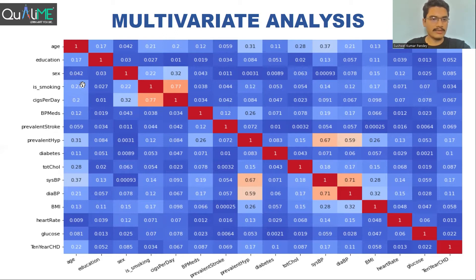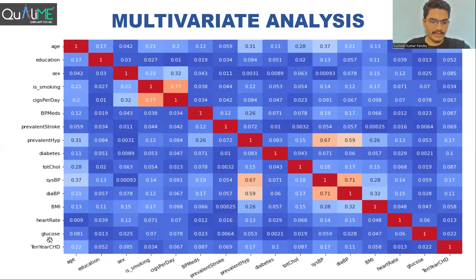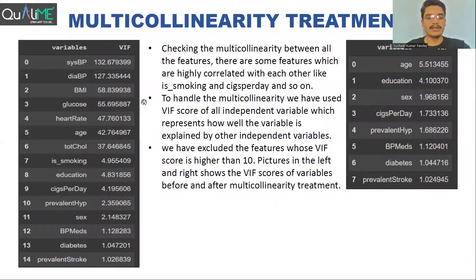One way to handle this is to look at the degree of correlation with the target variable. For example, 'is smoking' has a correlation of 0.21 with the target, while 'cigarettes per day' has 0.2, so we can drop 'cigarettes per day' as it contains less information. Another way is using the Variance Inflation Factor (VIF). We kept the VIF threshold at 10 and kept dropping variables with a VIF score greater than 10 one by one, checking remaining features each time. Finally, all remaining features had a VIF score less than 10, so multicollinearity was dealt with.